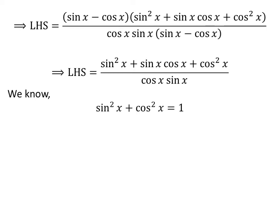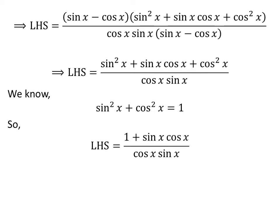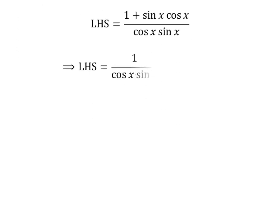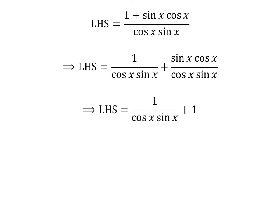We know square of sin of x plus square of cosine of x is equal to 1. Here I have applied the above identity in the numerator of the expression. Here I have expressed the above fraction as sum of two fractions. Here I have cancelled out the common factors in the numerator and the denominator of the second fraction.